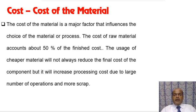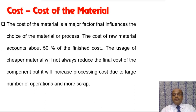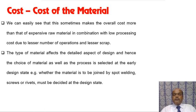Cost of material is a major factor in material selection. Out of a product cost of 100 rupees, nearly 50 rupees can be raw material cost. Selecting the proper raw material reduces product cost, but a cheaper material may require a more expensive processing method. The optimum balance is needed — sometimes a cheaper raw material with high processing cost can exceed the overall cost of an expensive raw material combined with low processing cost due to fewer operations and less scrap.